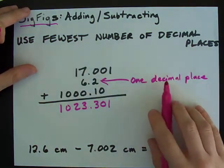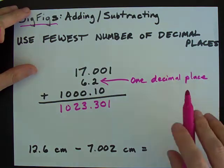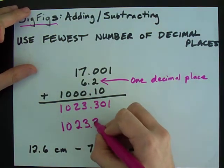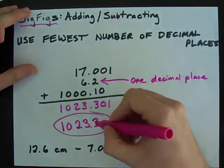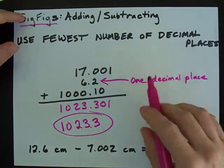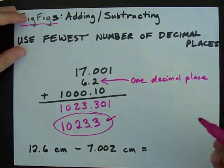The fewest number of decimal places is just 1, so your final answer here only has 1 place after the decimal. Again, use the fewest number of decimal places to get your final answer.